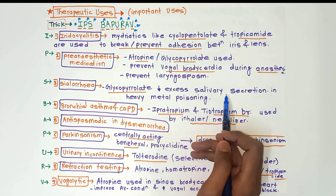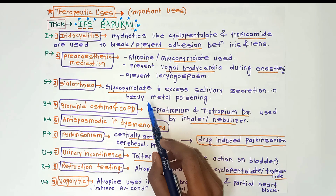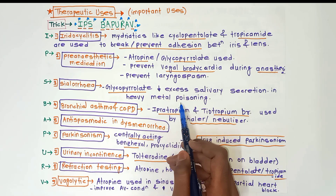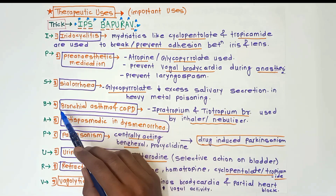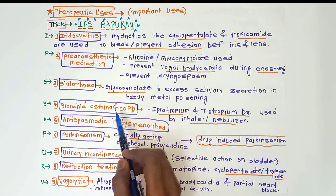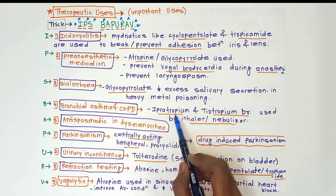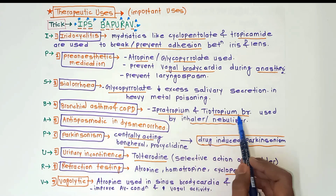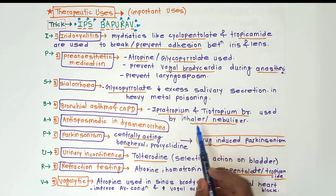For bronchial asthma and COPD, ipratropium bromide and tiotropium bromide are used. They are administered by inhaler or nebulizer.